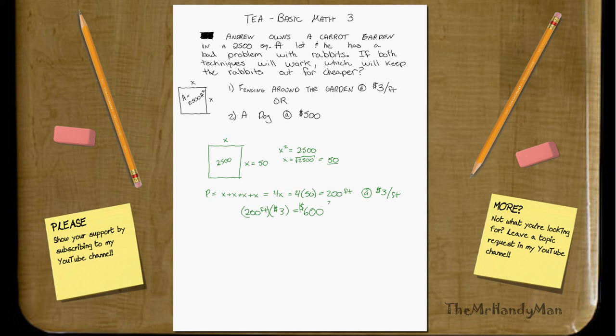Well, the fencing costs $600 and the dog is $500. So the result is you need to get technique 2, to get the dog.